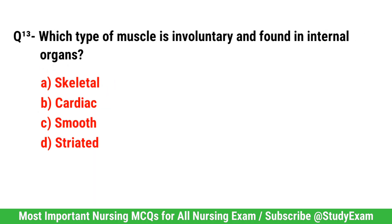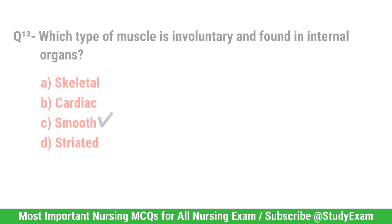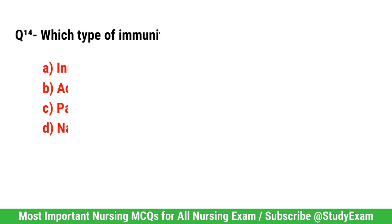Question No. 13. Which type of muscle is involuntary and found in internal organs? Correct option is C. Smooth muscle.